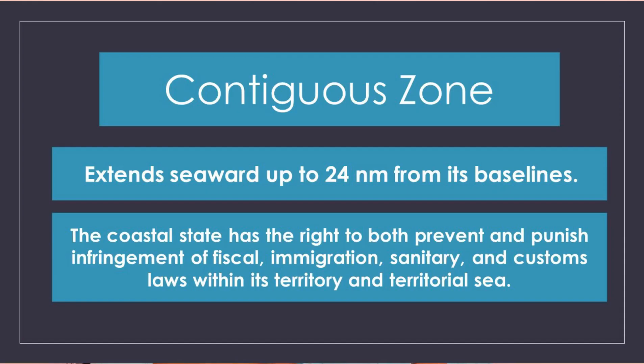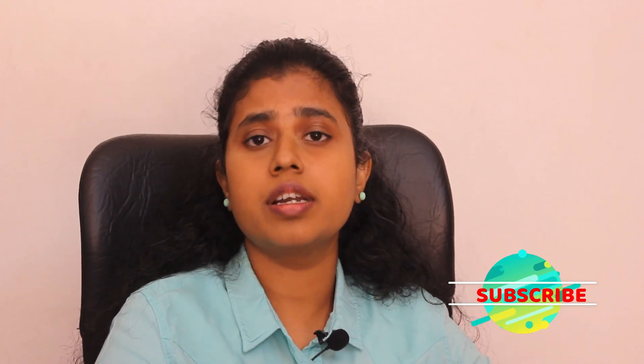In the Contiguous Zone, coastal states have the right to prevent and punish infringement of any fiscal, immigration, sanitary, and customs laws. So, in the coastal state, there are many people who have the right to prevent an infringement of immigration, fiscal, sanitary, and customs law. In this case, there is an infringement.